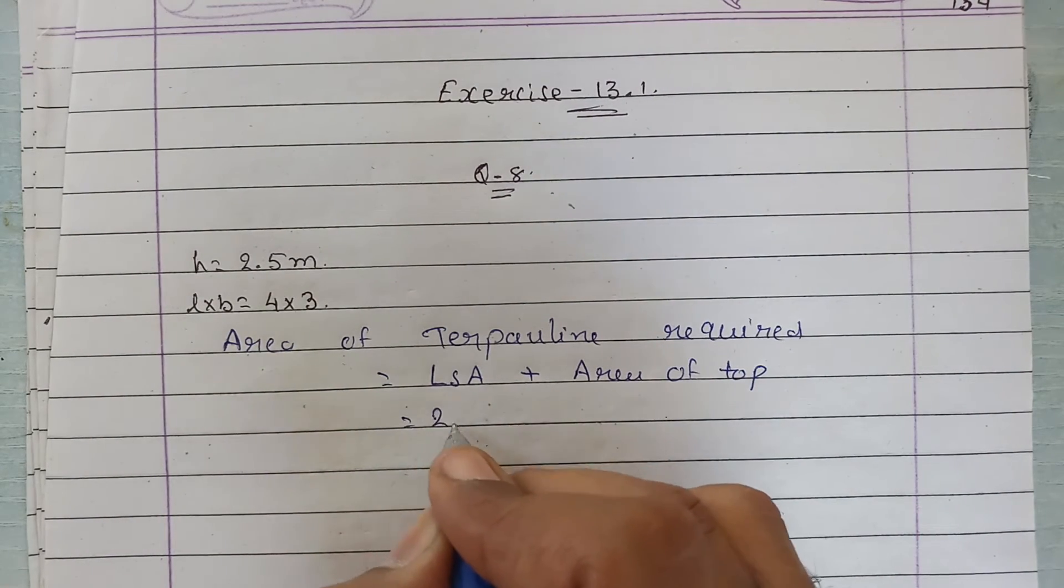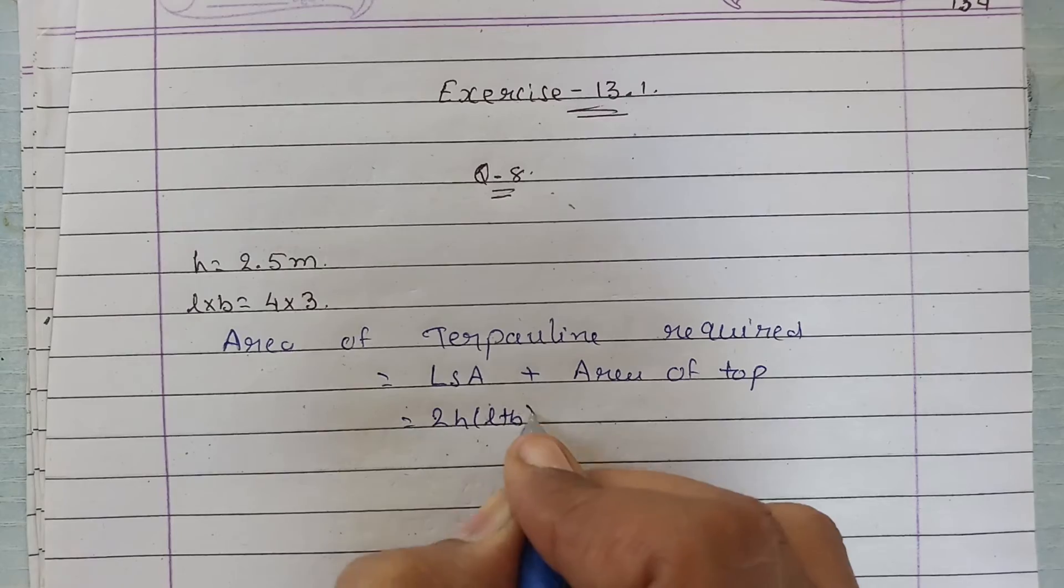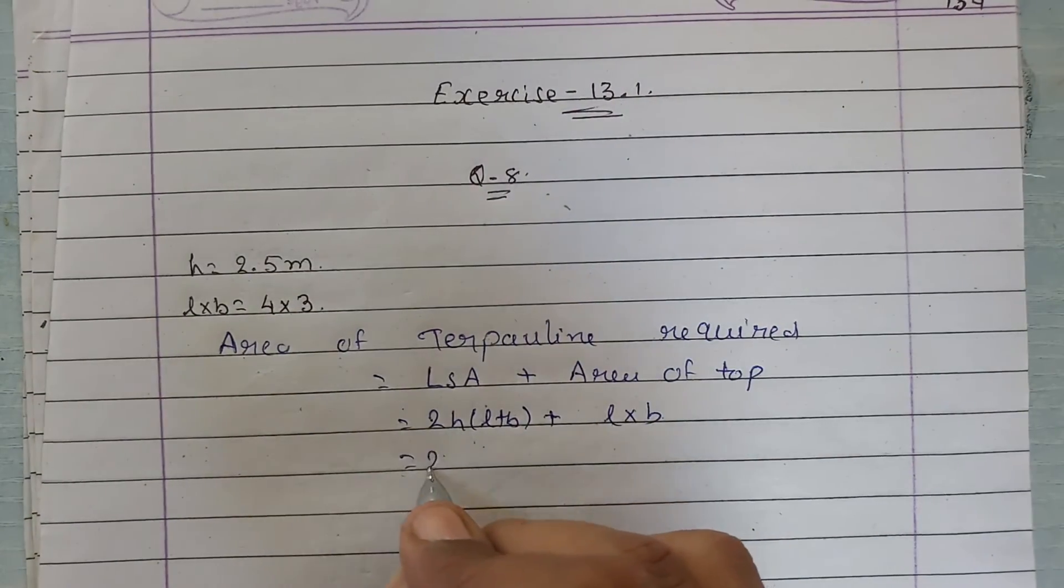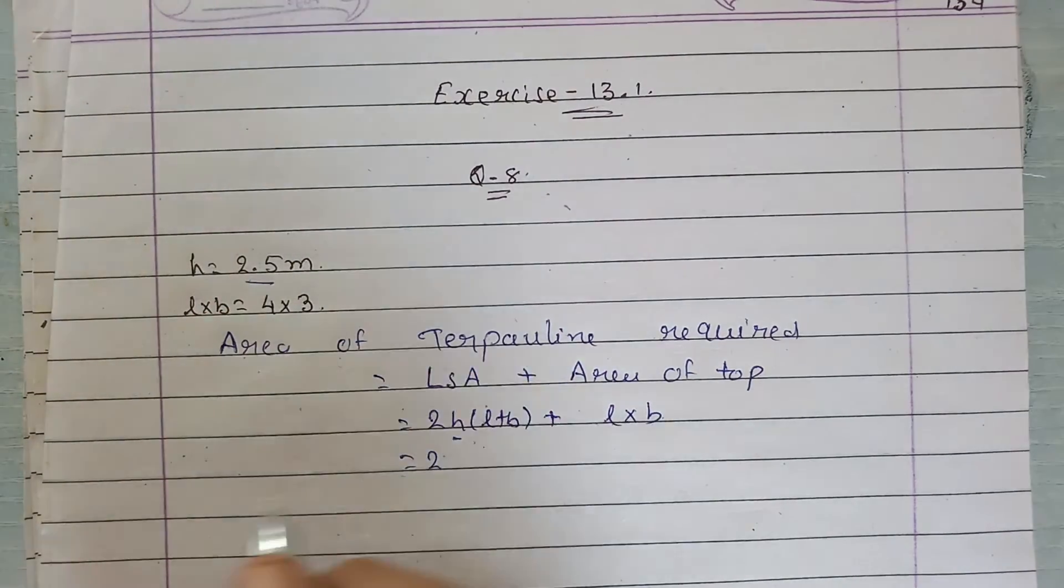Lateral surface area is 2h into l plus b, and area of the top is l into b. Okay, h we have given as 2.5.